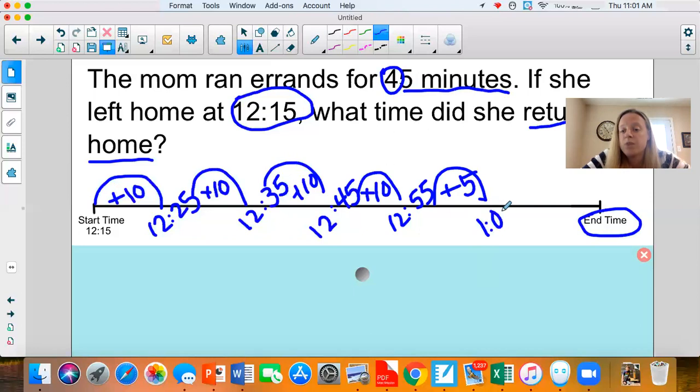So 12:55 plus five would give me one o'clock. Because remember, we don't do 12:60 with time, correct? We move from 12:55 to one o'clock. So that means that my end time that she would be done shopping would be one o'clock.